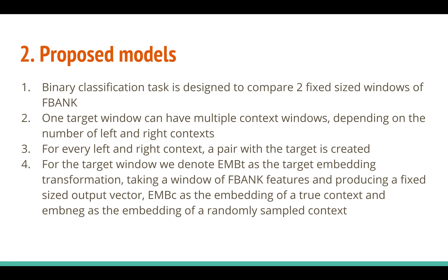The speech input is a filter bank input. One target window, which is one speech segment, can have multiple context windows. For example, if we are in the middle of a speech, we can look at left or right context, or two left and two right contexts, or three left and three right. We form pairs of a target and context segments from filter bank images. If target and context are in context in the speech, we classify as one; if randomly sampled from the data, we classify as zero.